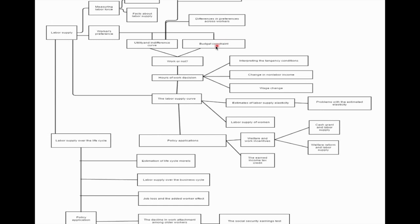From the budget constraint, we will see how workers would make their decision whether to work or not to work, and if they want to work, how many hours they will work and how many hours they will allocate for leisure. That's basically what I want to touch on at the very beginning; the rest of the structure we will cover in other discussions.